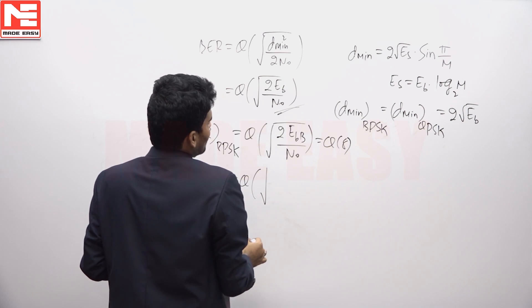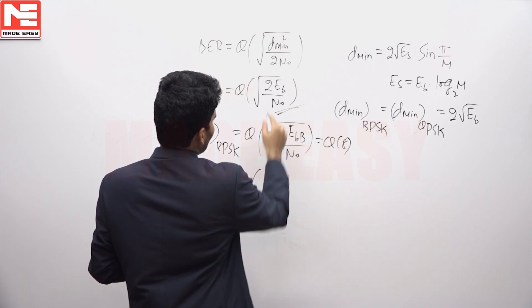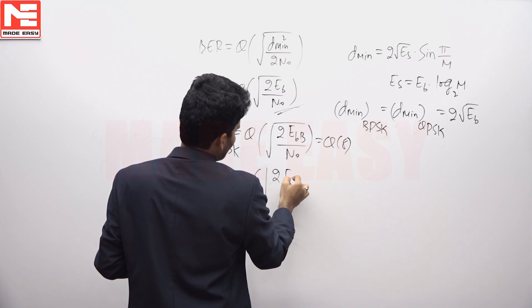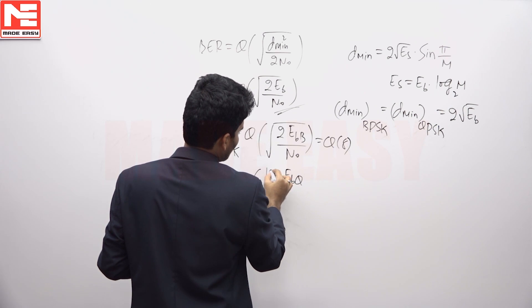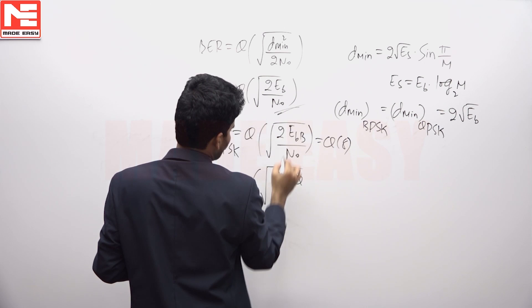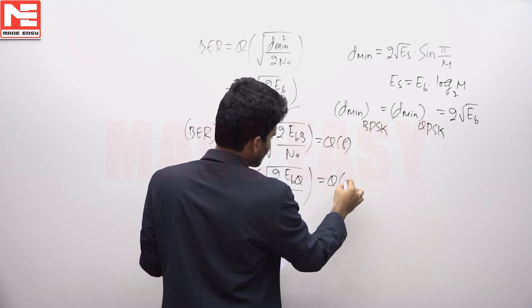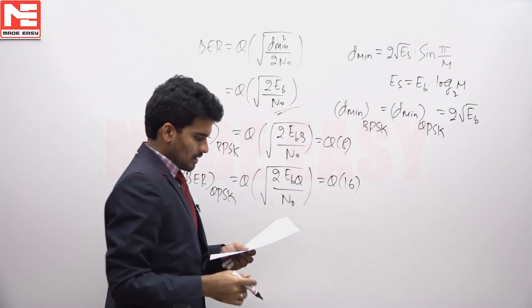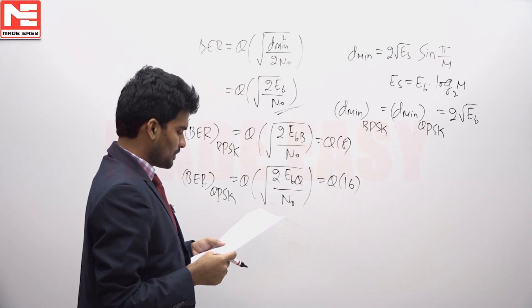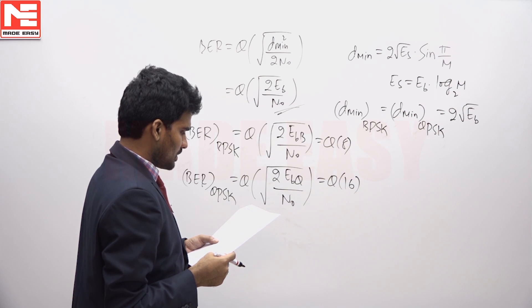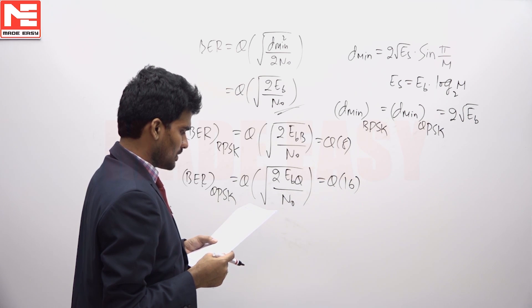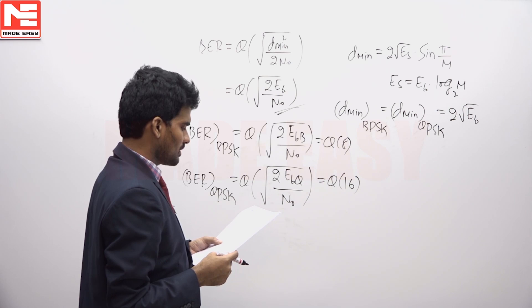Bit error rate of QPSK, the expression will be the same, but the average bit energy I am denoting as EBQ by N0. It is given as Q of 16. We have to find out the average bit energy used in BPSK.